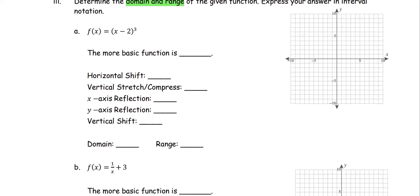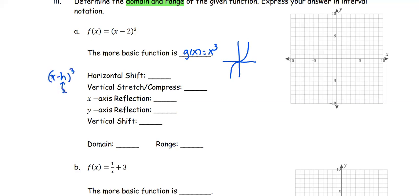For the first function, f(x) equals the quantity x minus 2 to the power of 3. The more basic function would be g(x) equals x to the third power. The graph of this more basic function is the increasing cubic curve. For the horizontal shift, the graph shifts left or right of the more basic function. This one is in the form of (x minus h) to the third power, so the h value is 2. Therefore, it's going to shift to the right 2 units.